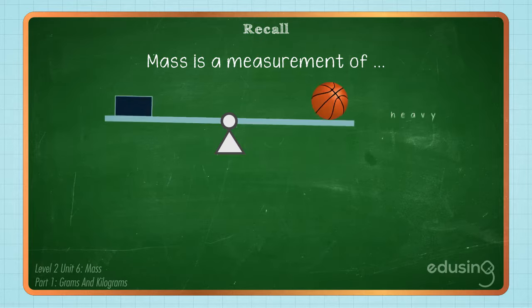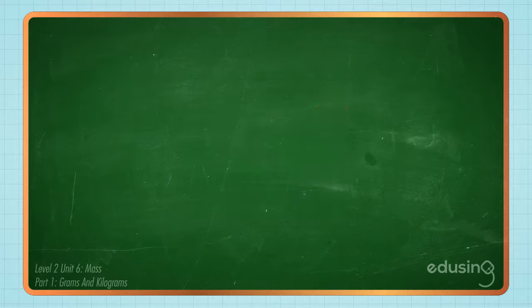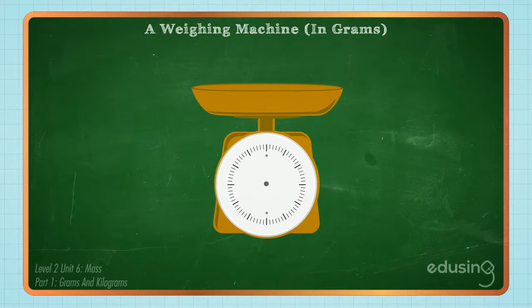Mass is a measurement of how heavy or how light something is. To measure the mass of an object, we can use a weighing machine.